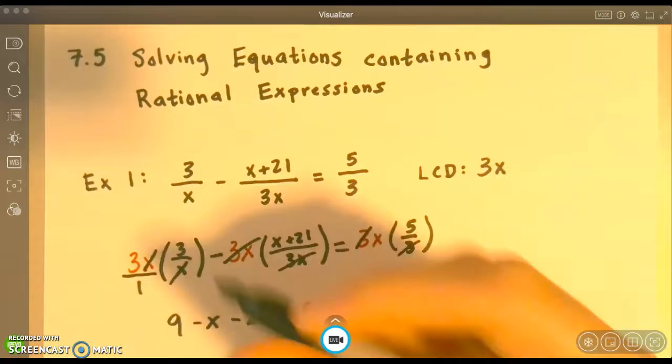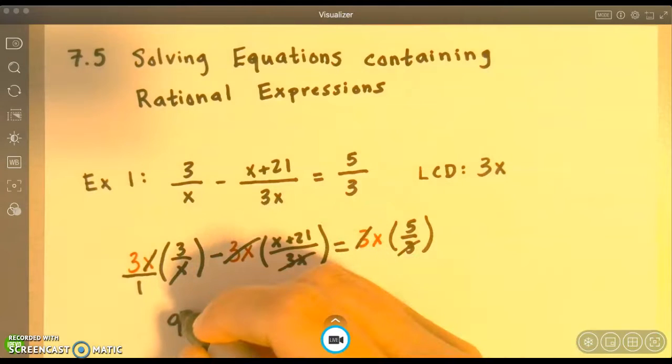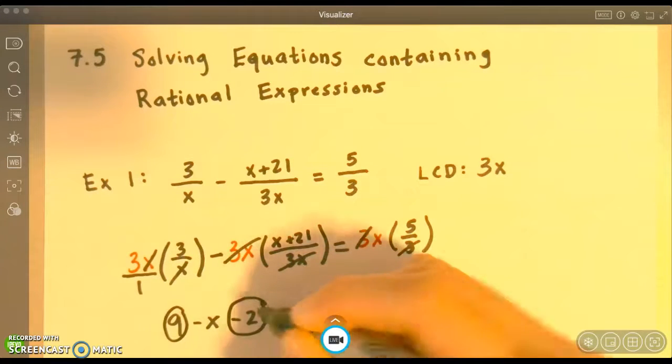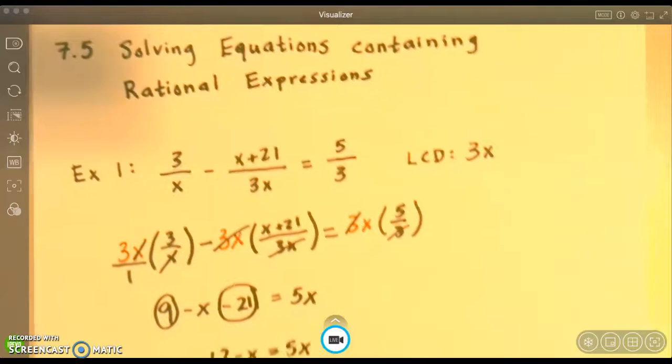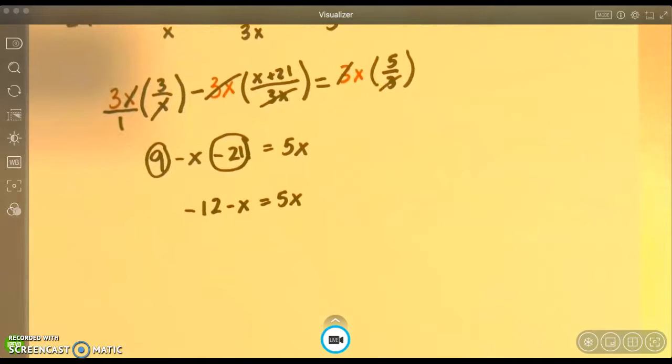Now I'm going to start combining the terms. I can do 9 minus 21, and I get -12. So I did 9 minus 21, I got -12.